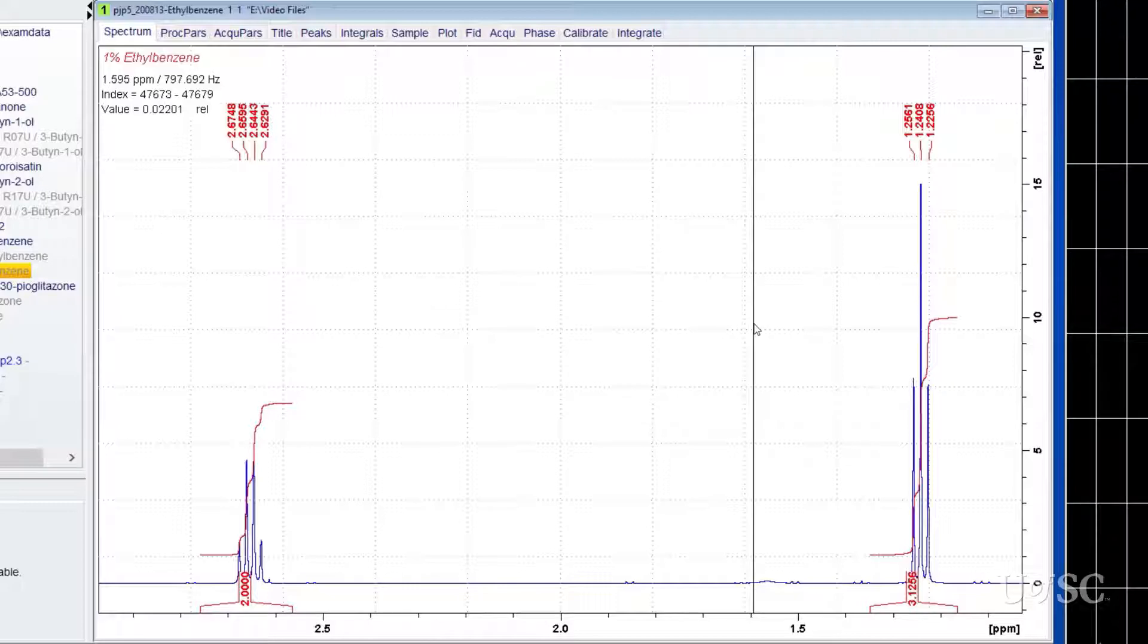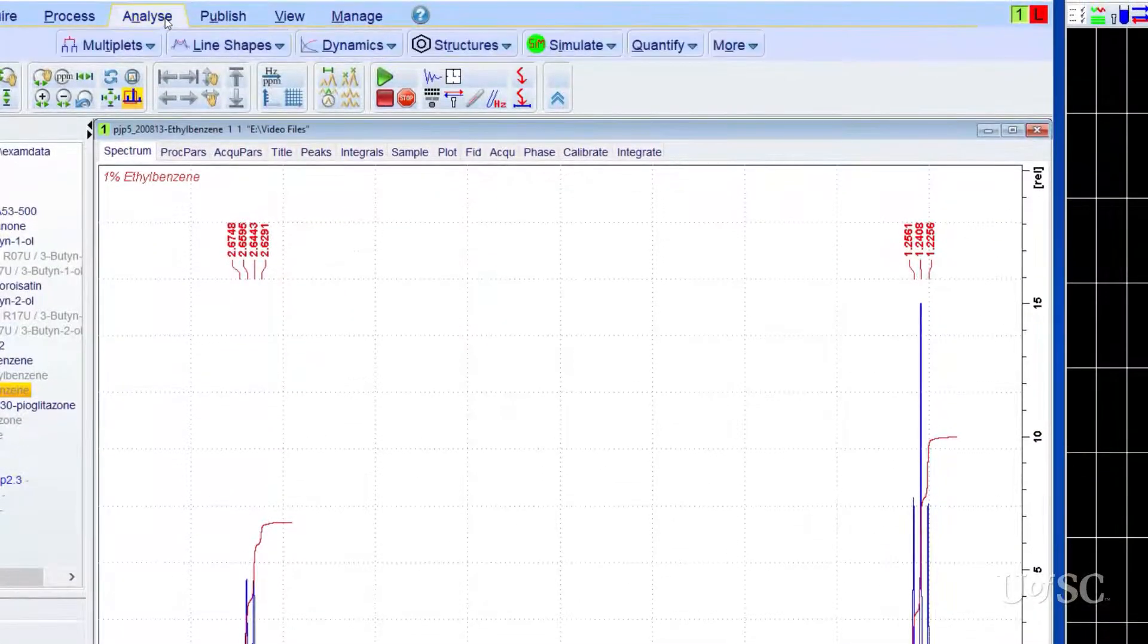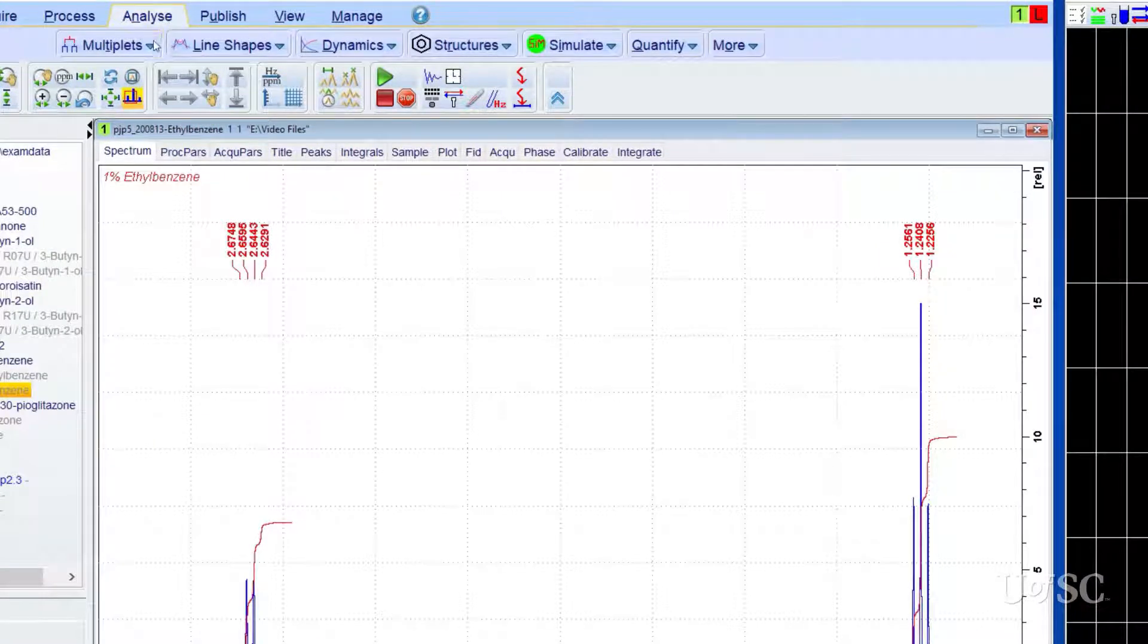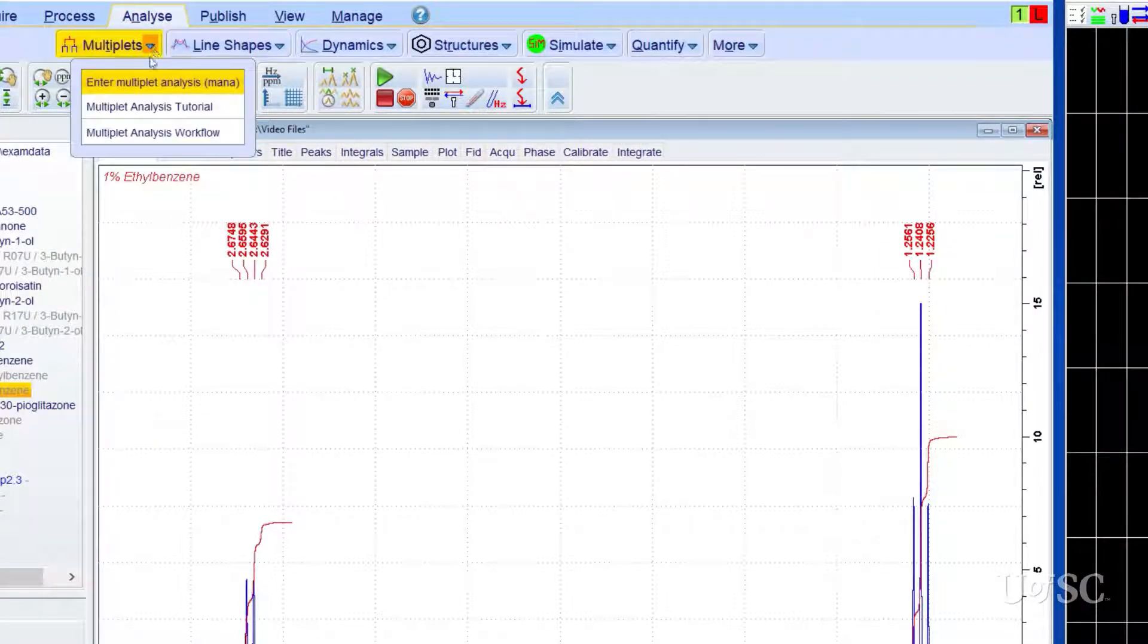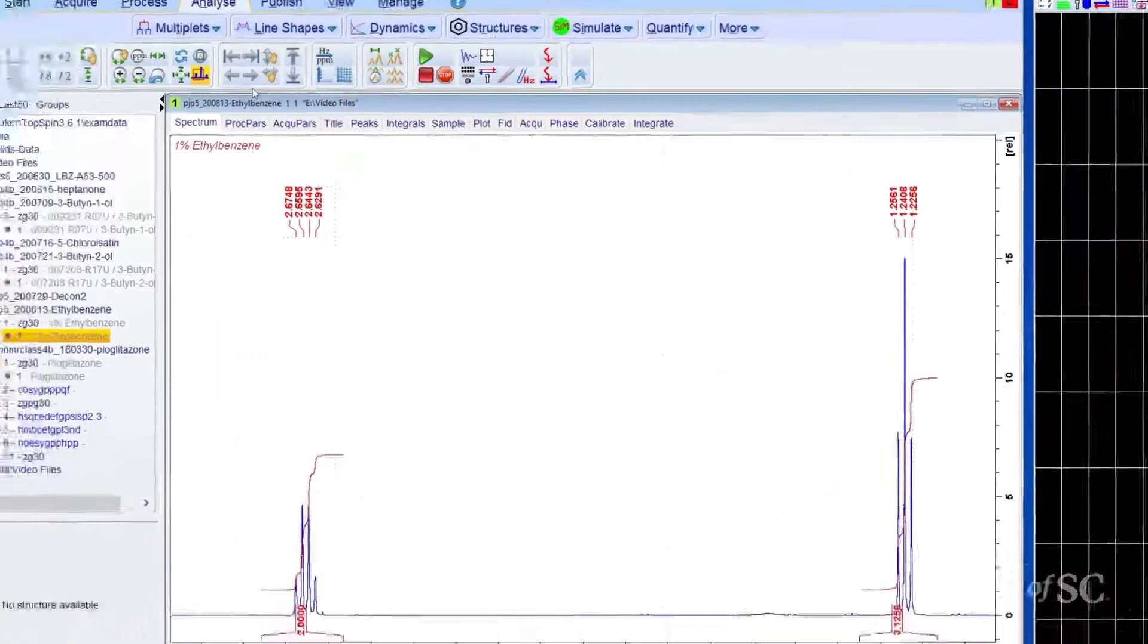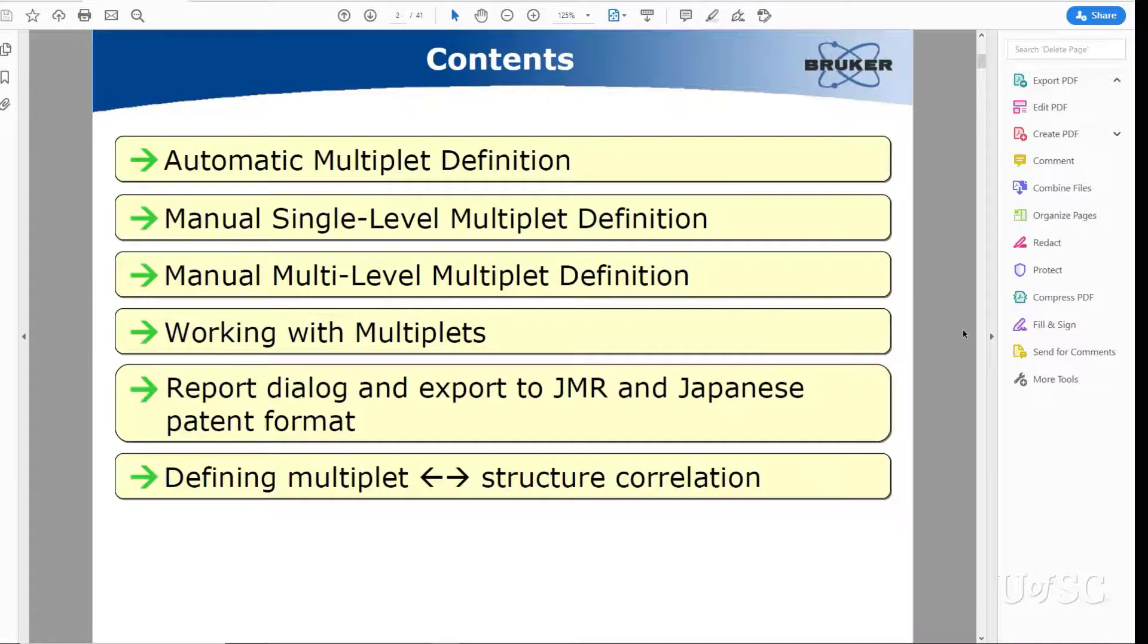To start the multiplet analysis, select analyze from the main menu and choose the multiplets pull-down menu. The tutorial option will open a document that runs through the steps for using the tool. We will demonstrate some of the functions here, but review this document for more details.